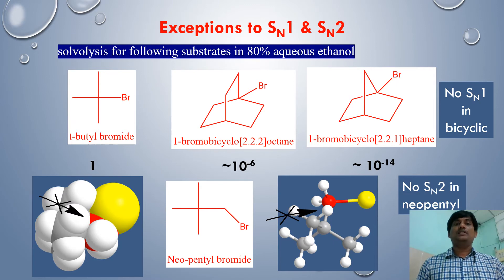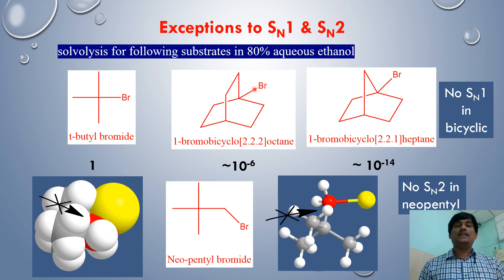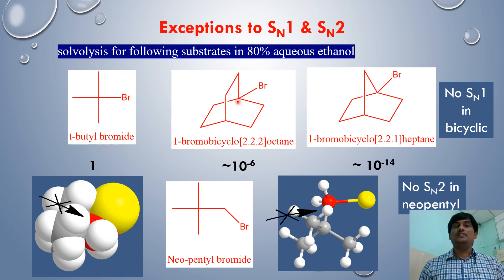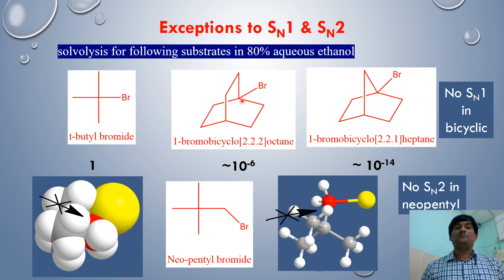There are exceptions to SN1 and SN2 reactions. Tertiary alkyl halides normally exhibit SN1, but in bicyclic compounds where the halogen is attached at a bridgehead position, even though that carbon is tertiary, it cannot generate a stable carbocation. This is because carbocation at the bridgehead would require 120-degree bond angles, which is geometrically impossible in bicyclic ring systems. Therefore, these bicyclic compounds cannot exhibit SN1 reactions despite having a tertiary carbon.